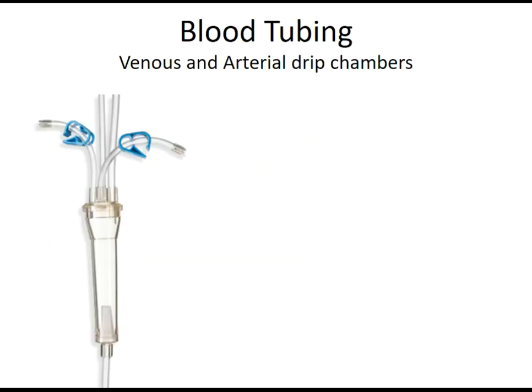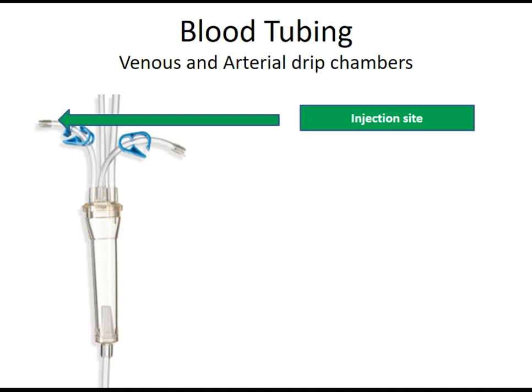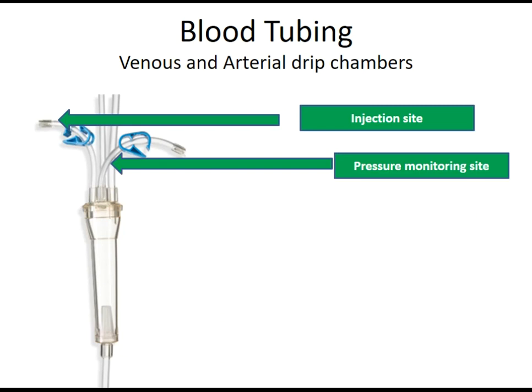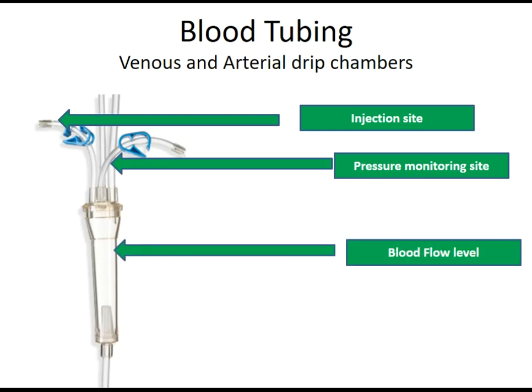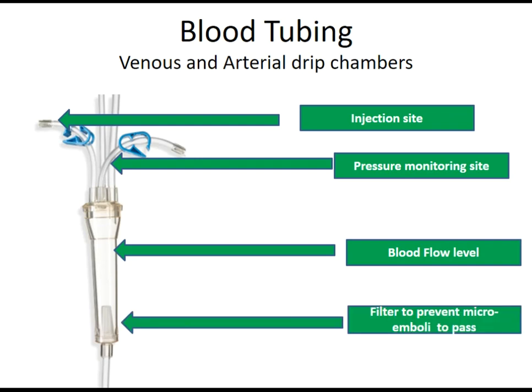The blood tubing venous and arterial drip chambers include an injection site, a pressure monitor site attached to the transducer protector, a blood flow level indicator, and a filter to prevent micro-emboli from passing to the patient.